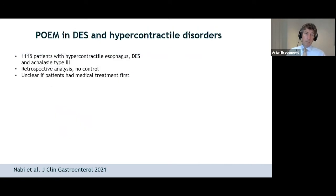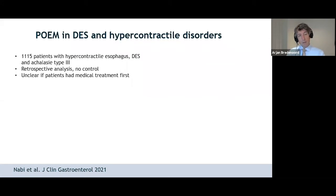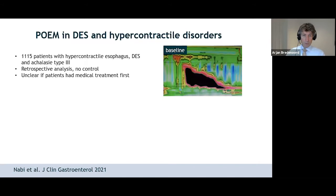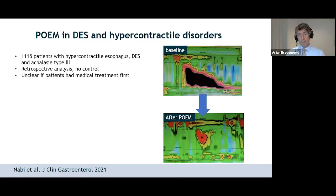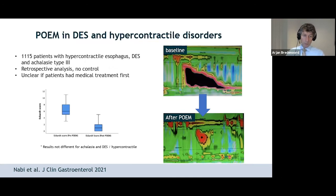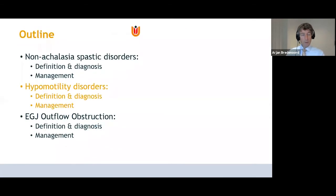Regarding POEM in these conditions, there's some retrospective data from a large group of patients with hypercontractile esophagus, DES, and type 3 achalasia — but no control group and unclear if patients had medical treatment first. POEM has a very profound effect on esophageal contractility — the contractility essentially disappears — and symptoms improve, but without any control group, a substantial placebo effect is expected. POEM is quite an invasive treatment.